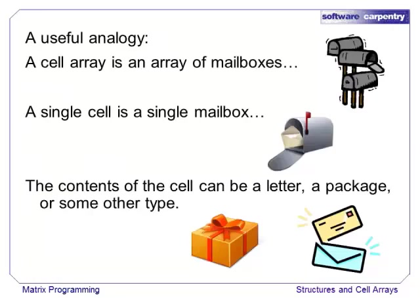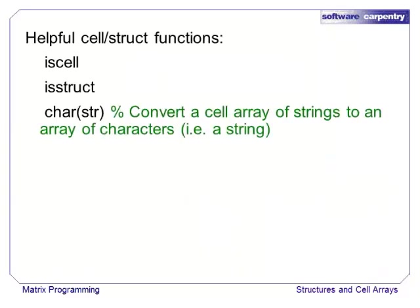This analogy might help you tell the difference. If a cell array is a series of mailboxes, then accessing a cell array using parentheses is equivalent to identifying a single mailbox. Indexing the cell array using braces is like getting the contents of the mailbox. There are several functions that will help you navigate between cell arrays, structs, and strings. iscell and isstruct are pretty obvious. The function char will flatten a cell array of strings into a regular array of characters.